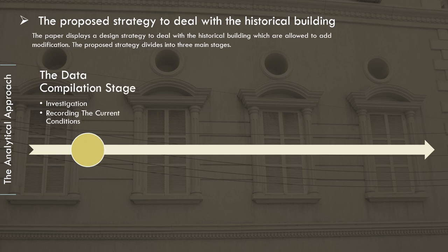In the data compilation stage, the current conditions of historical buildings are investigated and recorded through a set of items including: building established date, original name, original owner, building site, architectural style, materials, structural system, building area, number of stories, and original function.